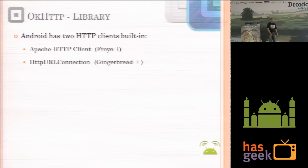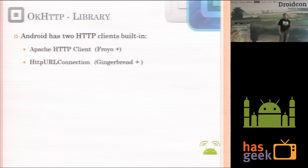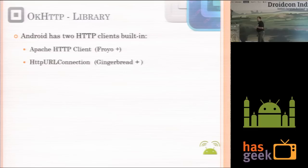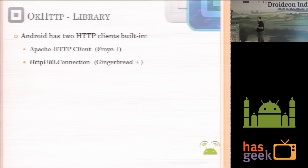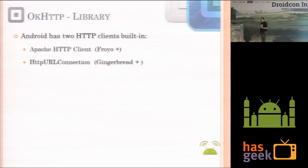Now let's talk about OKHttp. In Android, if you want to communicate with the network, there are two ways: the Android SDK comes with the Apache HTTP client (supported on Froyo+), and there is HttpURLConnection (java.net, supported after Gingerbread+). OKHttp says it is similar to the Apache HTTP client, built in Java so it can be used in any Java application, and it is more robust and efficient than Apache HTTP client or HttpURLConnection.